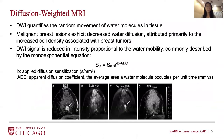Another sequence commonly used is called the diffusion-weighted MRI, or DWI sequence, which measures the random movement of water molecules in tissue. Because benign and malignant breast lesions exhibit different amounts of water diffusion, they will look differently on DWI as well.